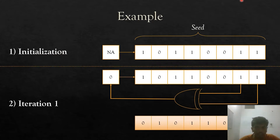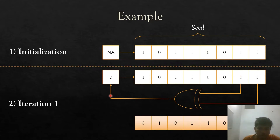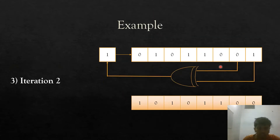I will explain the LFSR method using an example. The seed is 10110011 — an 8-bit seed. We take the XOR of the last two bits, which are the least significant bit and the second least significant bit. The output becomes the new most significant bit, the remaining bits shift right, and the least significant bit is removed. So the new seed becomes 01011001. In the next iteration, the XOR of the last two bits of this new seed is 0 XOR 1 = 1, giving the output for iteration 2 as 10101100.